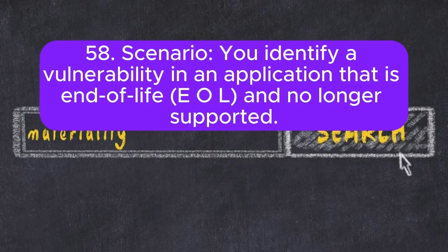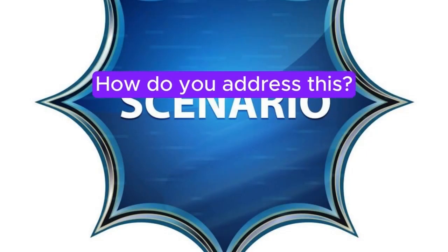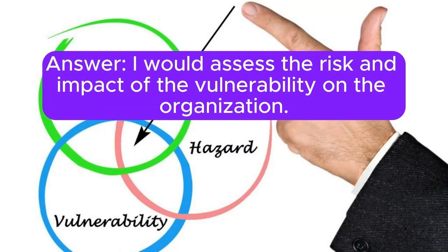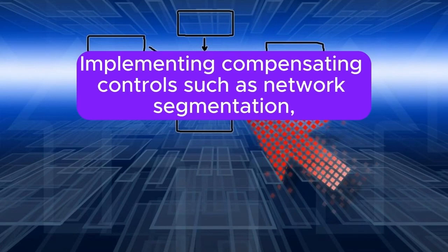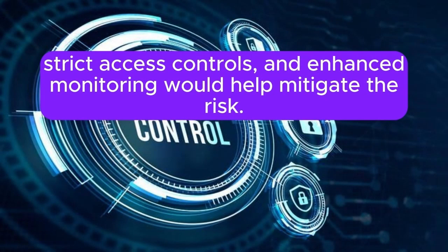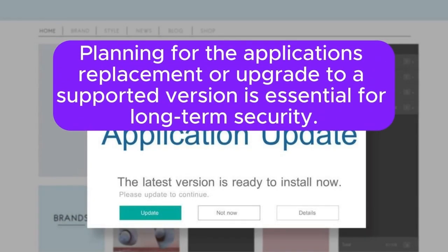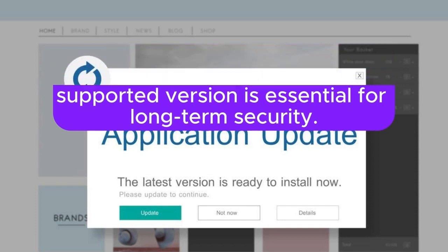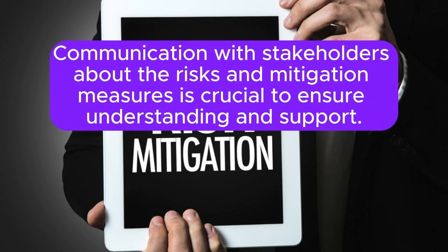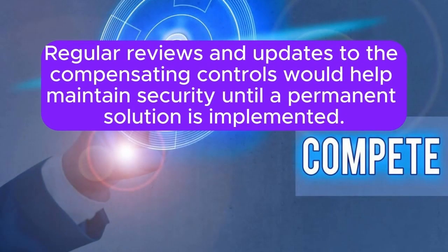Scenario 58: You identify a vulnerability in an application that is end-of-life (EOL) and no longer supported. How do you address this? I would assess the risk and impact of the vulnerability on the organization. Implementing compensating controls such as network segmentation, strict access controls, and enhanced monitoring would help mitigate the risk. Planning for the application's replacement or upgrade to a supported version is essential for long-term security. Communication with stakeholders about the risks and mitigation measures is crucial to ensure understanding and support. Regular reviews and updates to the compensating controls would help maintain security until a permanent solution is implemented.